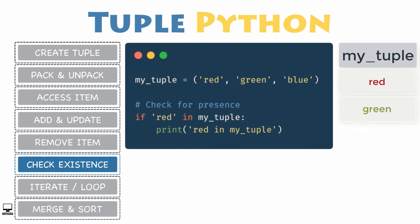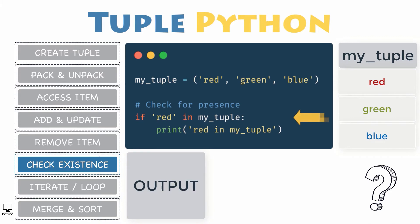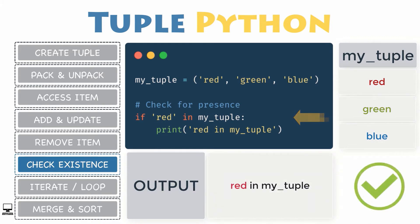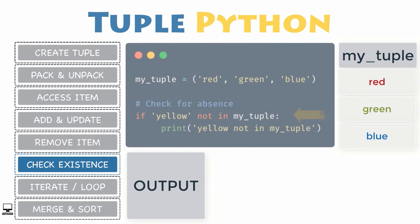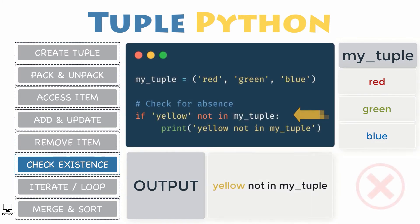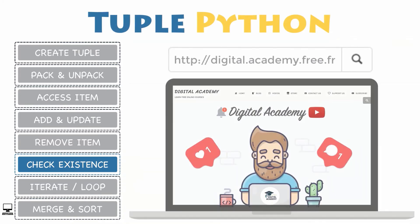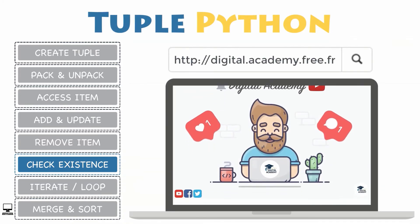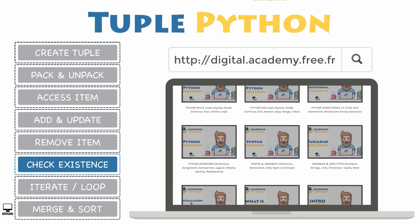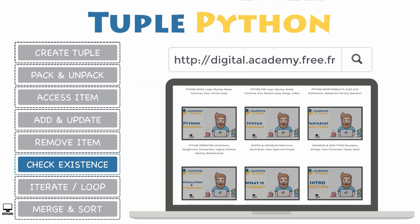Now let's look at checking the existence of an item. To determine whether a value is or is not in a tuple, you can use the 'in' and 'not in' membership operators combined with a Python if statement. For instance, the expression 'if red in my_tuple' will give a boolean value of True because the item is part of the tuple, but 'if yellow in my_tuple' will result in False and will not enter the if statement. If you need help with these kinds of statements, please check out the suggested videos on Python operators and conditionals.